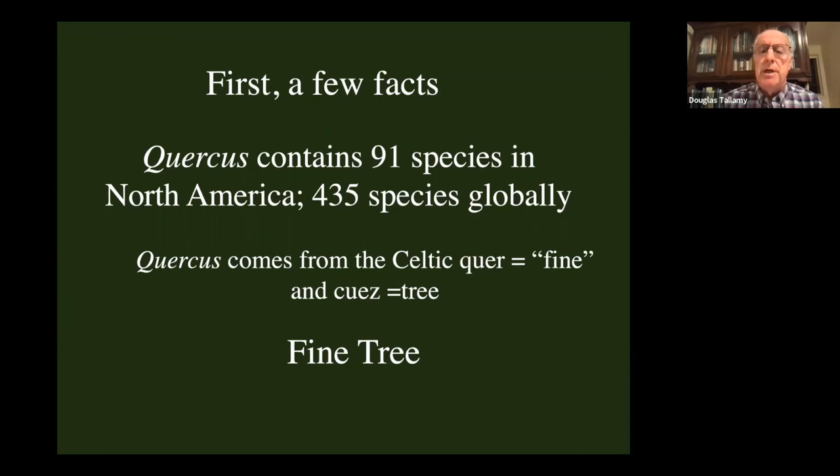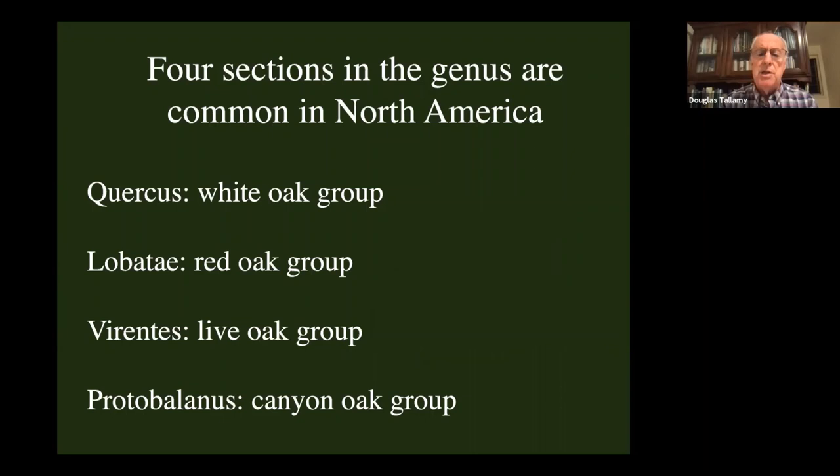There are four major taxonomic sections in the genus in North America: the white oak group, Quercus; the red oak group, Lobatae; the live oak group, Virentes; and the canyon oak group, Protobalanus, a much smaller group in the West.